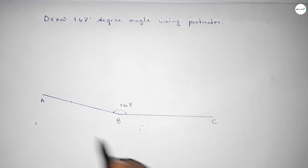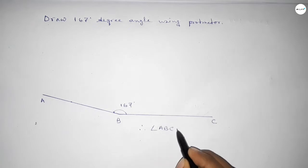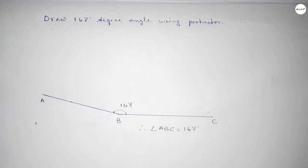So therefore angle ABC up to this, so angle ABC equal to 167 degree angle. That's all, thanks for watching. If this video is helpful to you, then please share it with your friend.